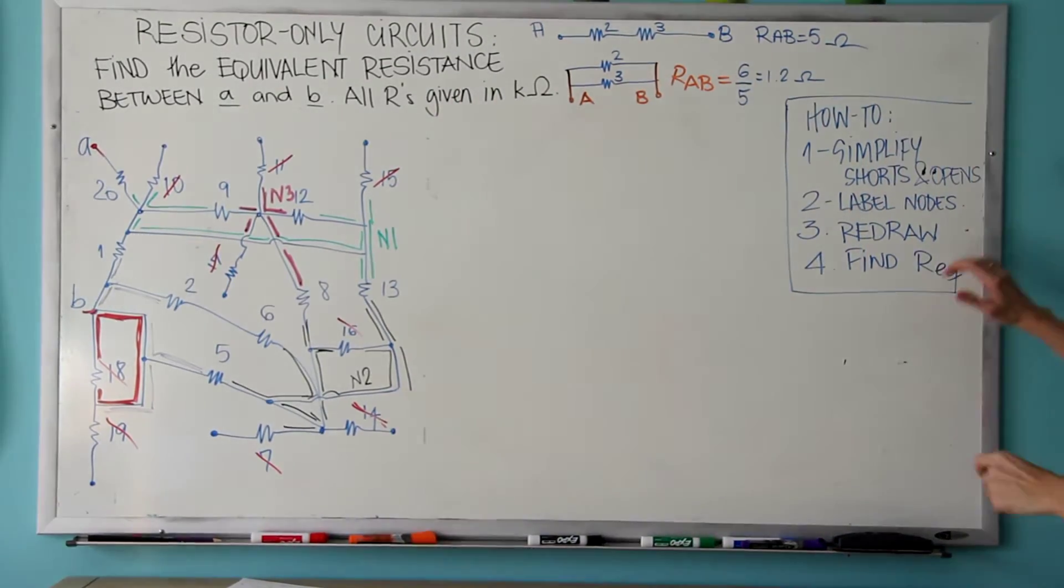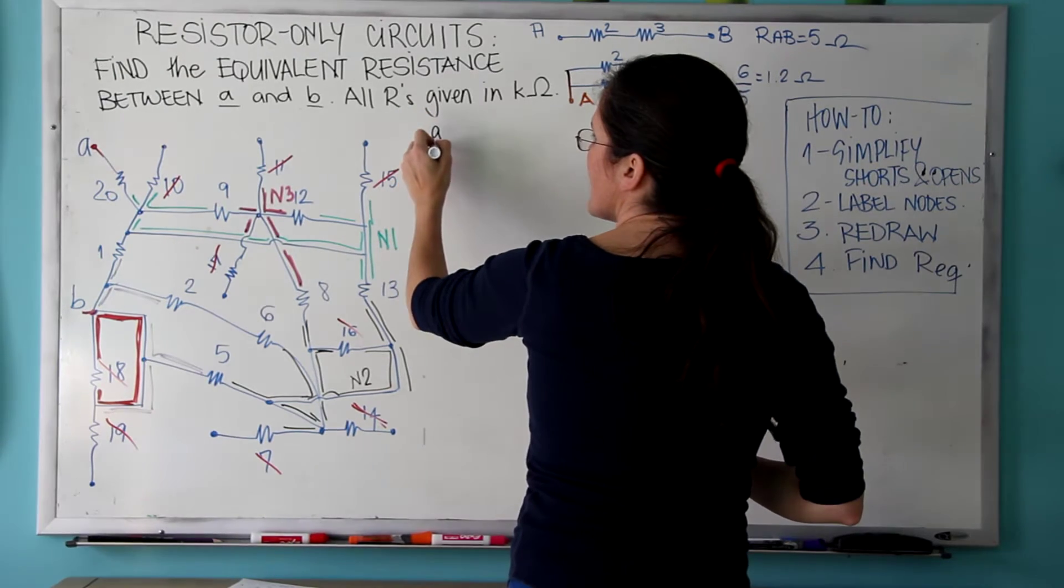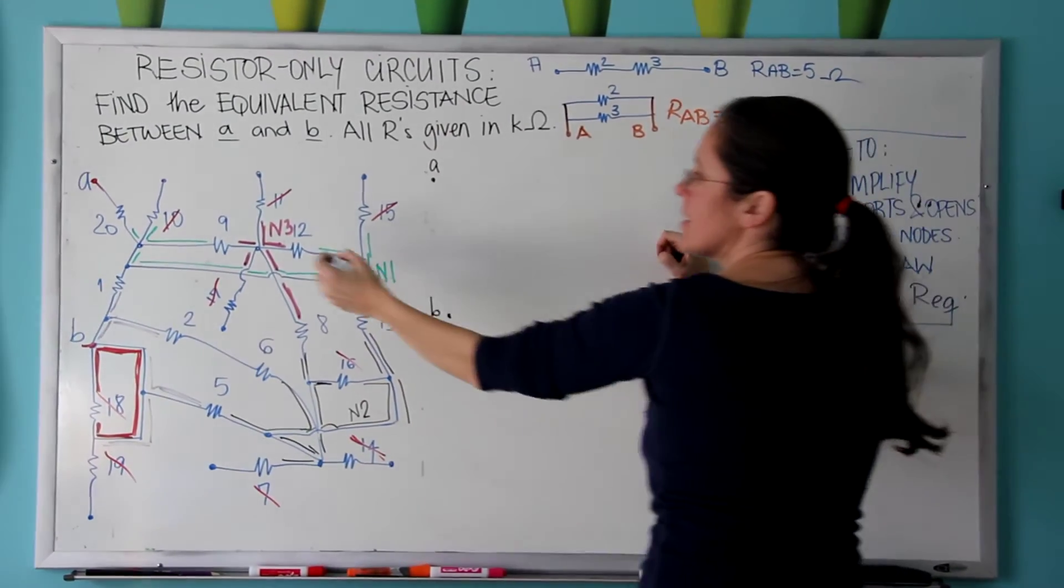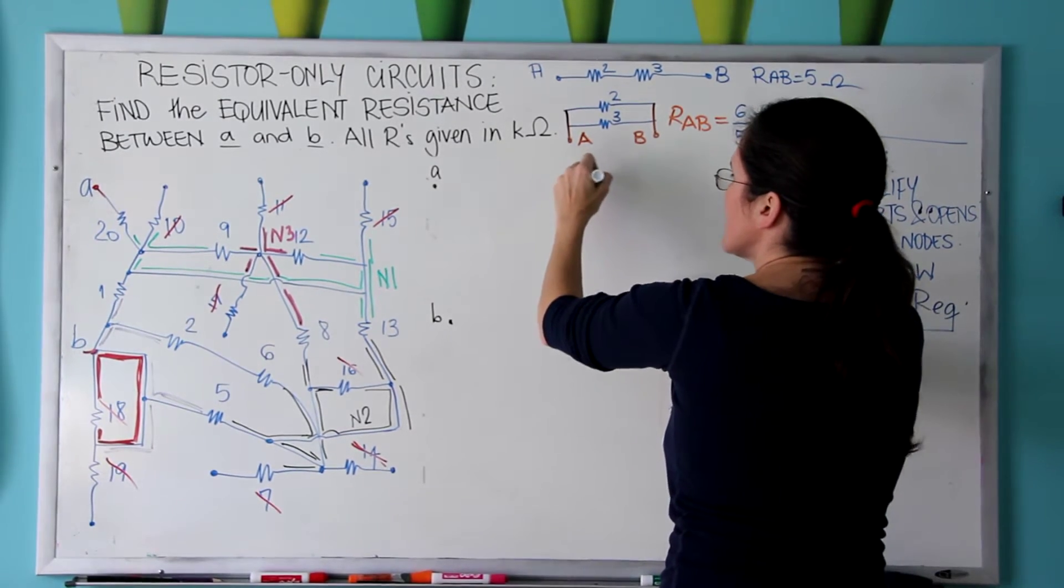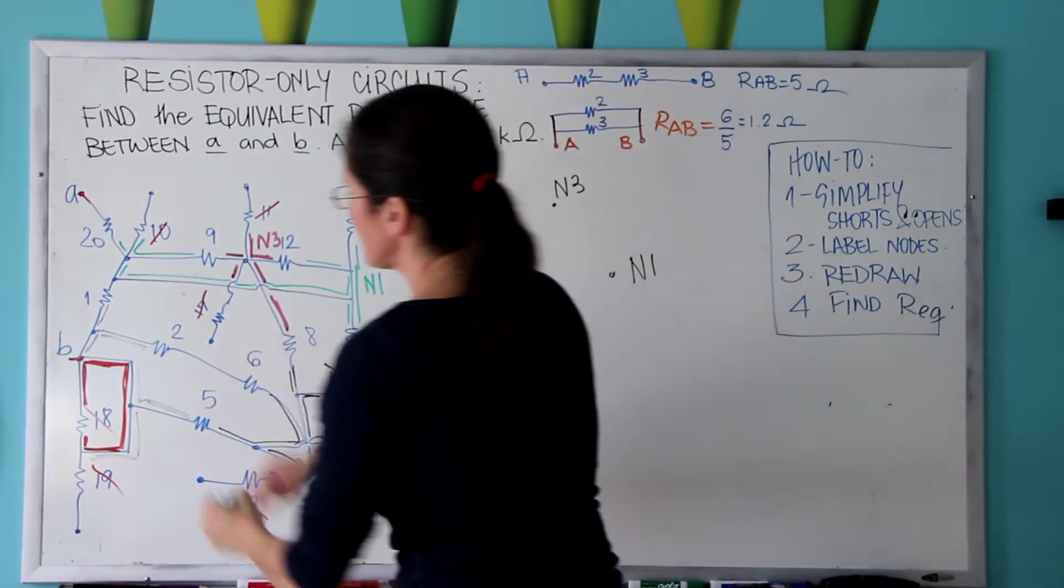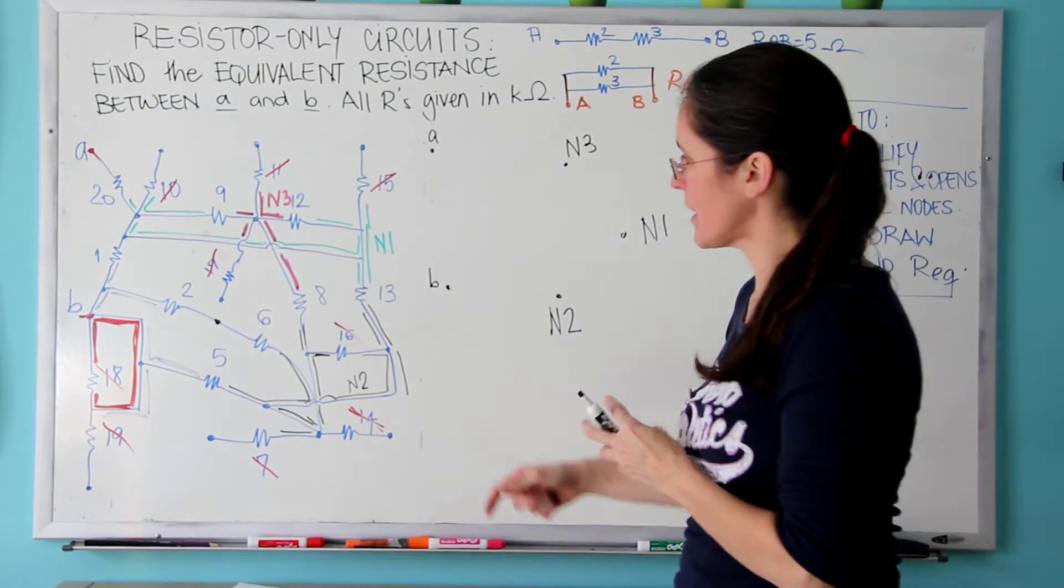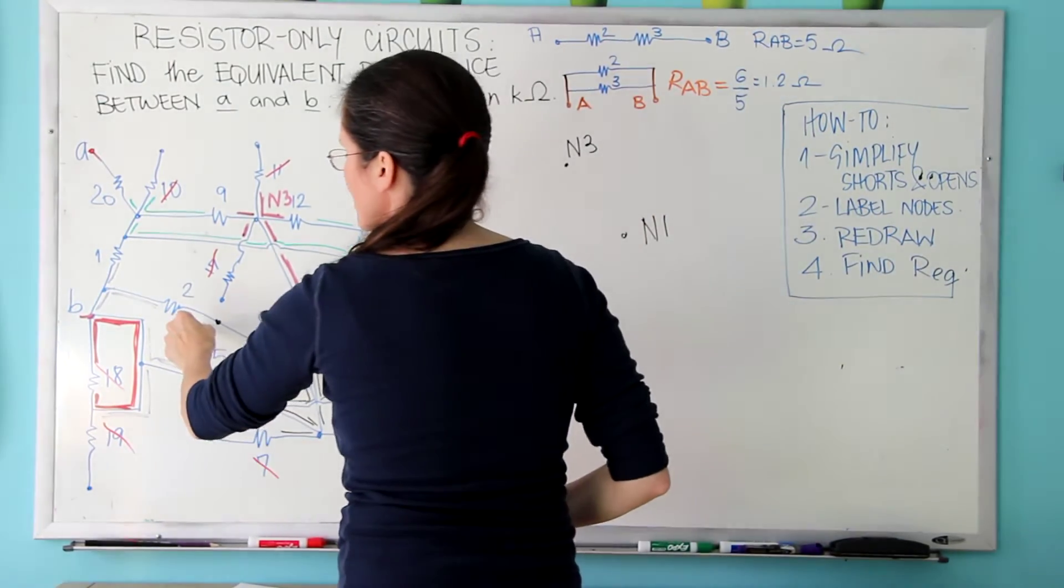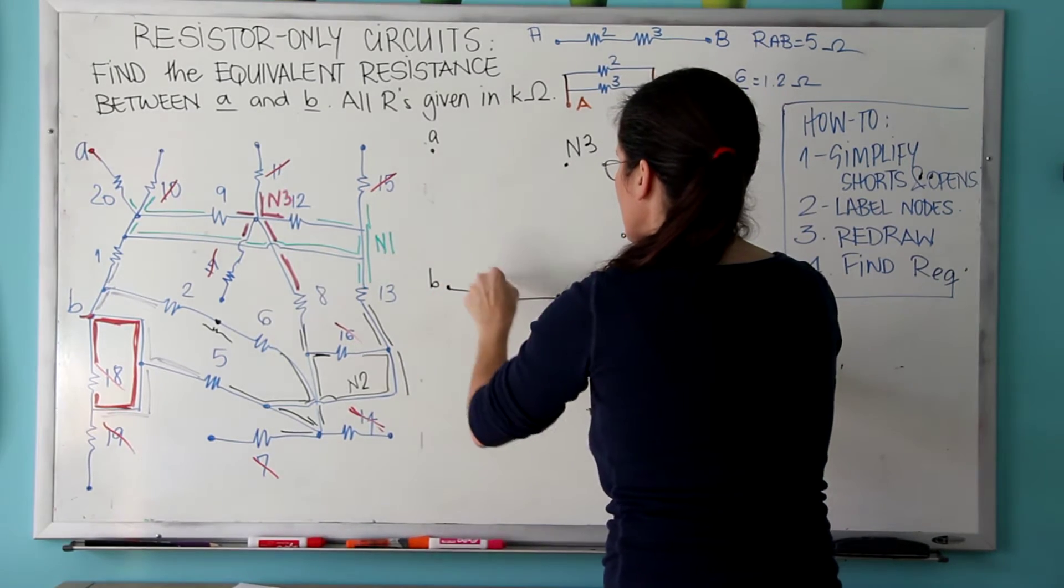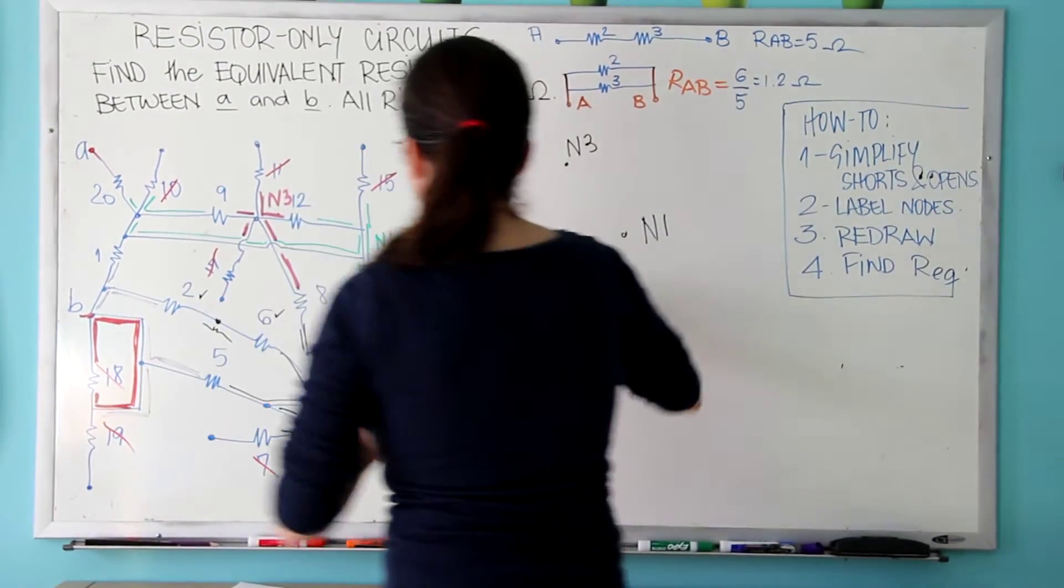And I'm going to cut it, so I don't need to worry about it. It's in parallel with a short. Finally, I'm going to only do one more node in here, I think node 3. This guy is my node 3. And now I want to redraw. This is my step 3, I'm going to redraw that circuit in black. And now node A and node B are my interesting nodes, because I want to measure from here to there. But then I have node 3, node 1, and node 2. This is all I need to draw.